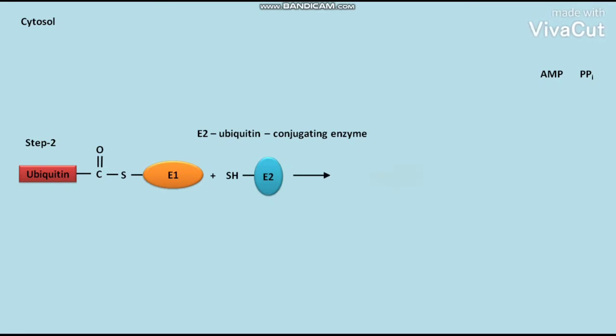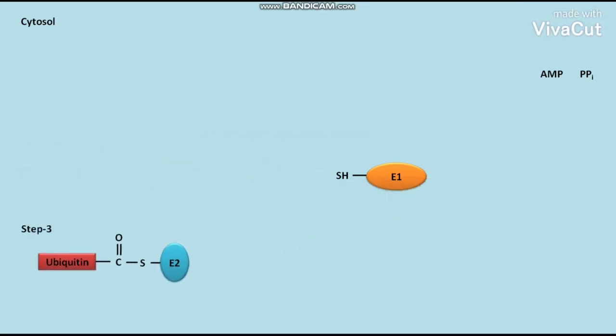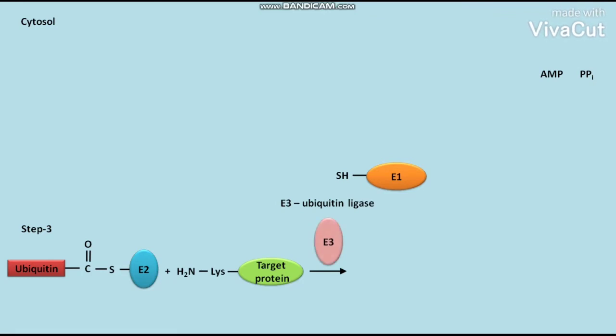In step three, the E2-ubiquitin complex reacts with a target protein in presence of E3, or ubiquitin ligase, to form a product in which the ubiquitin is attached to the target protein through an amide or isopeptide bond and a thiol group containing E2.